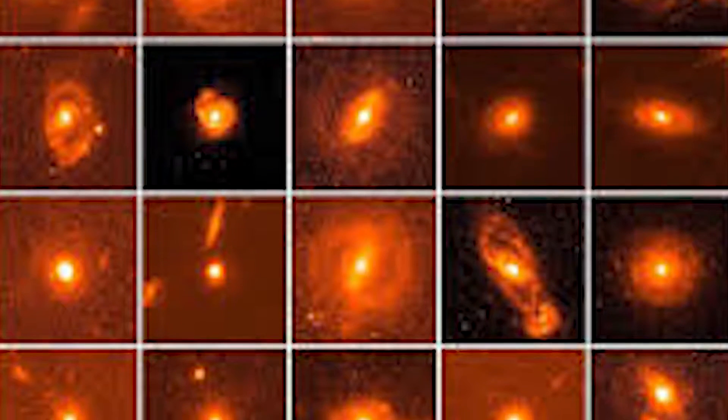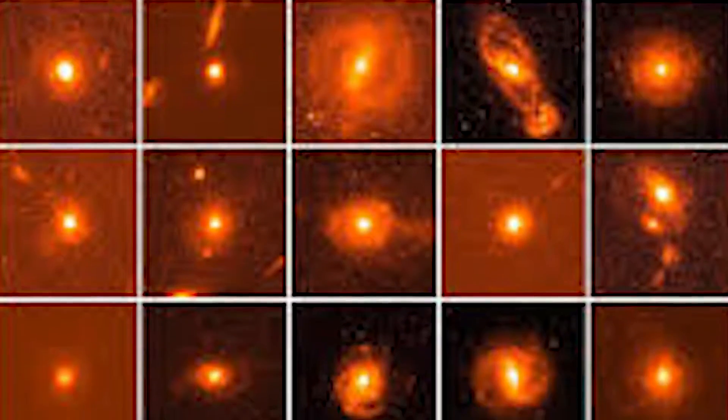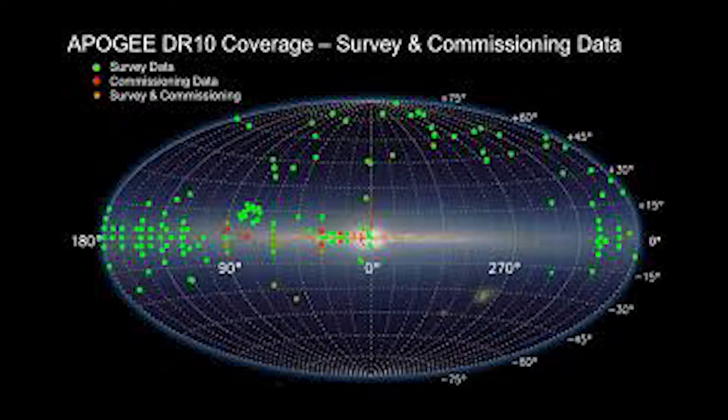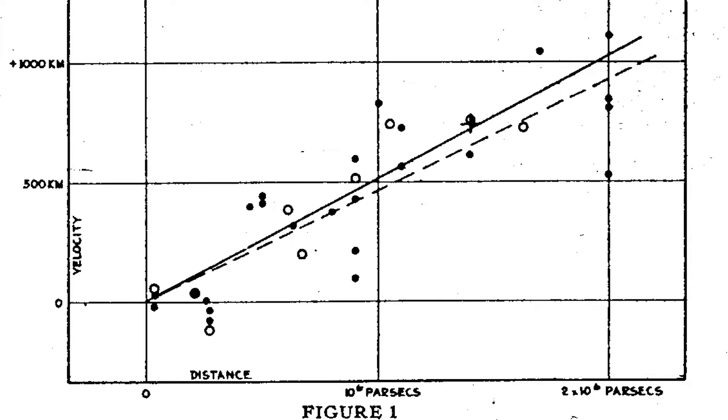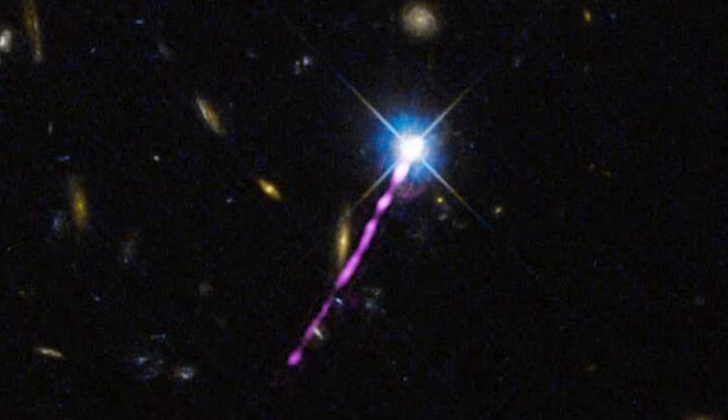More than 200,000 quasars are known, most from the Sloan Digital Sky Survey. All observed quasar spectra have redshifts due to the metric expansion of space. Applying Hubble's law to these redshifts, it can be shown that they are between 600 million and 29.36 billion light years away.